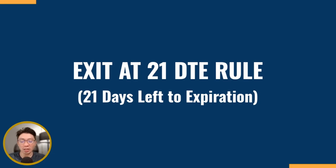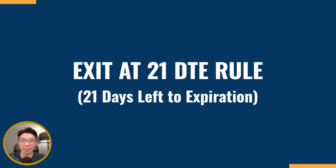So what exactly is 21 DTE? Just to make things clear, because some people actually get confused. 21 DTE just means that there is 21 days left to the expiration of the option. It doesn't mean that you have 21 days in a trade. It's 21 days left before the options expire — so it's like a countdown, so to speak.